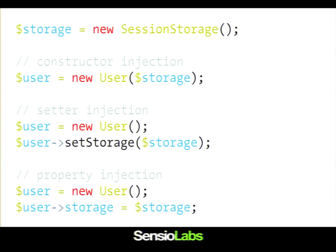You can also use setter injection — so instead of injecting my dependency into the constructor, I can create a setter method that takes a storage — or directly into some properties. I don't like the last one. Actually, nobody does in PHP. With a property you can't really do anything — you can't check things. I checked Drupal 8 and property injection is not used anywhere in the core. So it's all about constructor injection or setter injection.